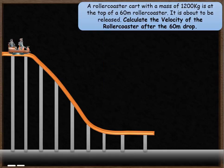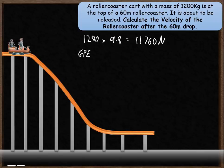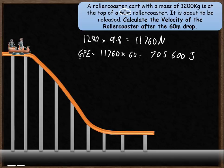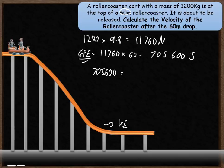So our question: the roller coaster cart has a mass of 1,200 kilograms, so its weight will be that times by 9.8. To work out its gravitational potential energy you take that weight and multiply it by the height of 60 meters, giving an answer of 705,600 joules. That's how much gravitational potential energy the object has. That will transform into kinetic energy by the time it reaches the bottom of the roller coaster. So we now need to work out what the velocity is: 705,600 equals the kinetic energy, which is half mv squared.